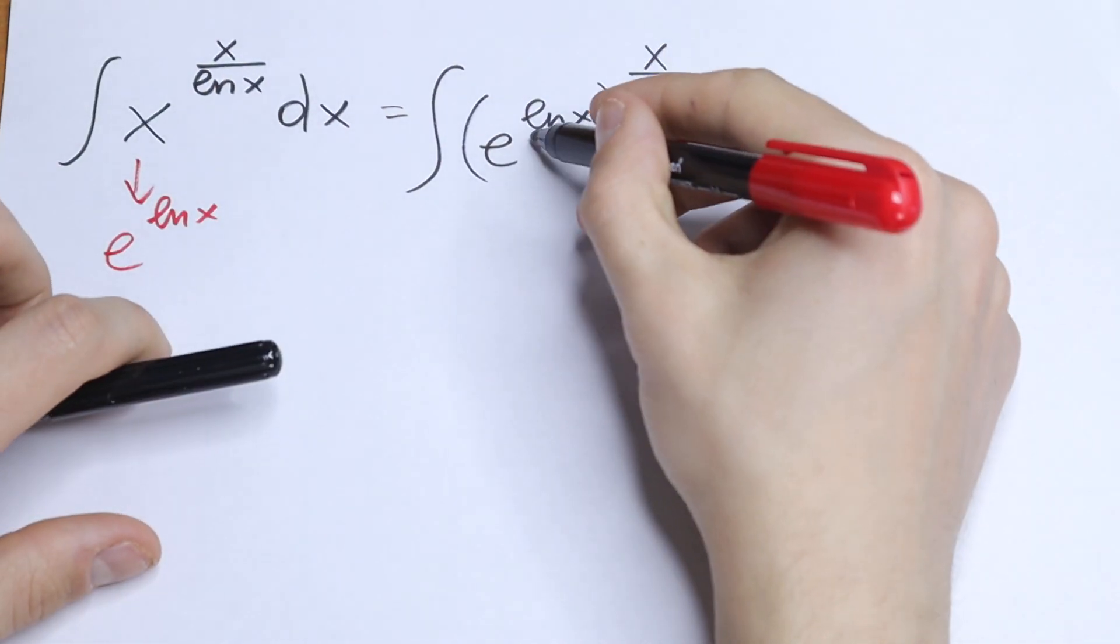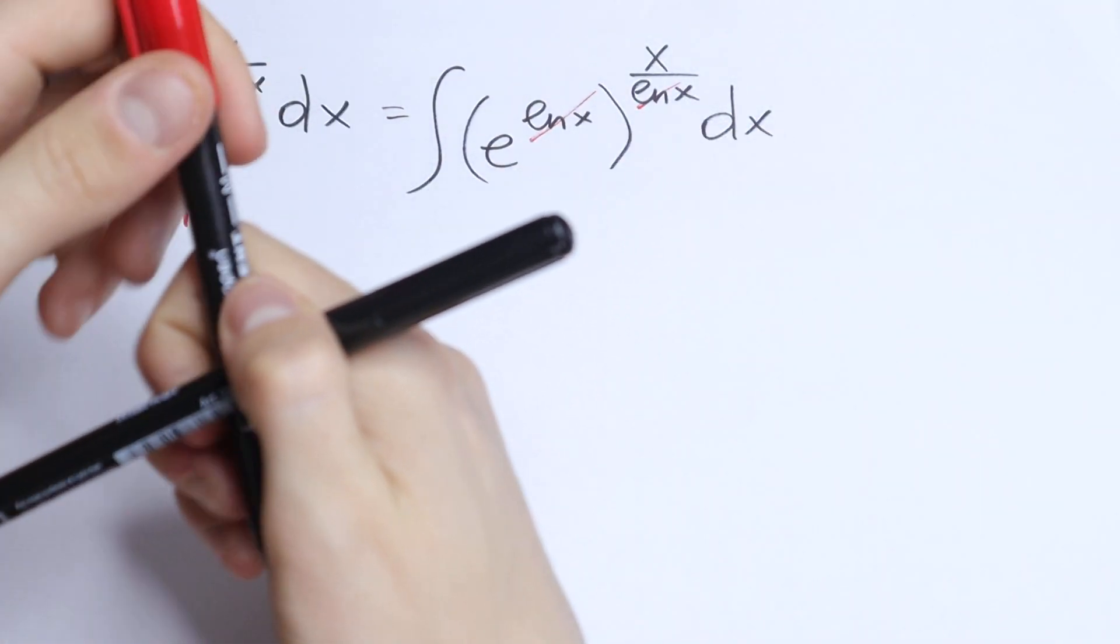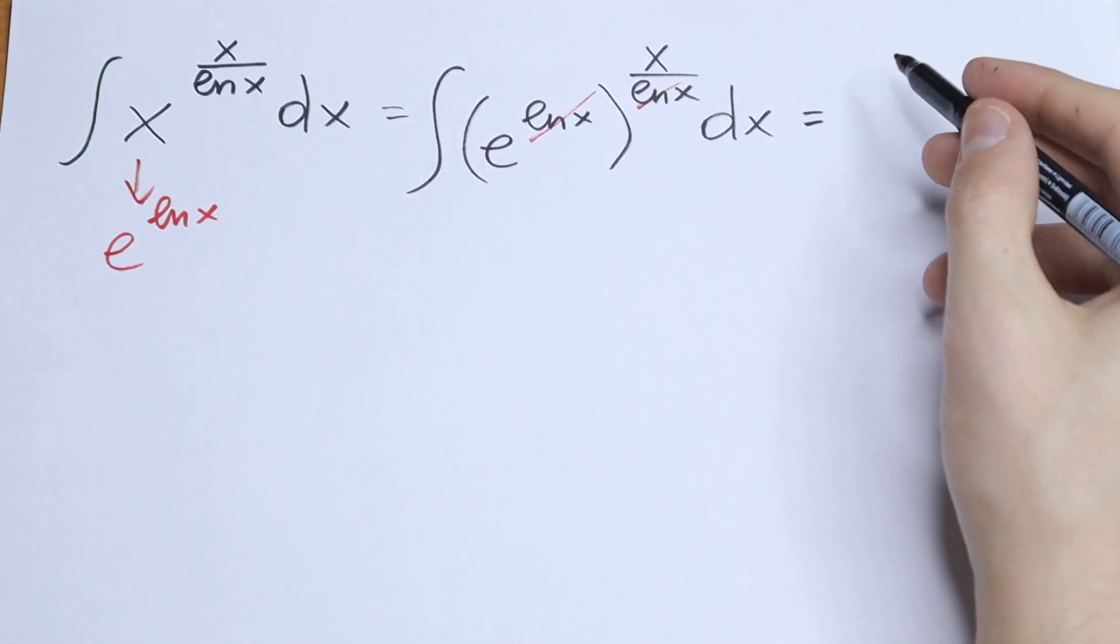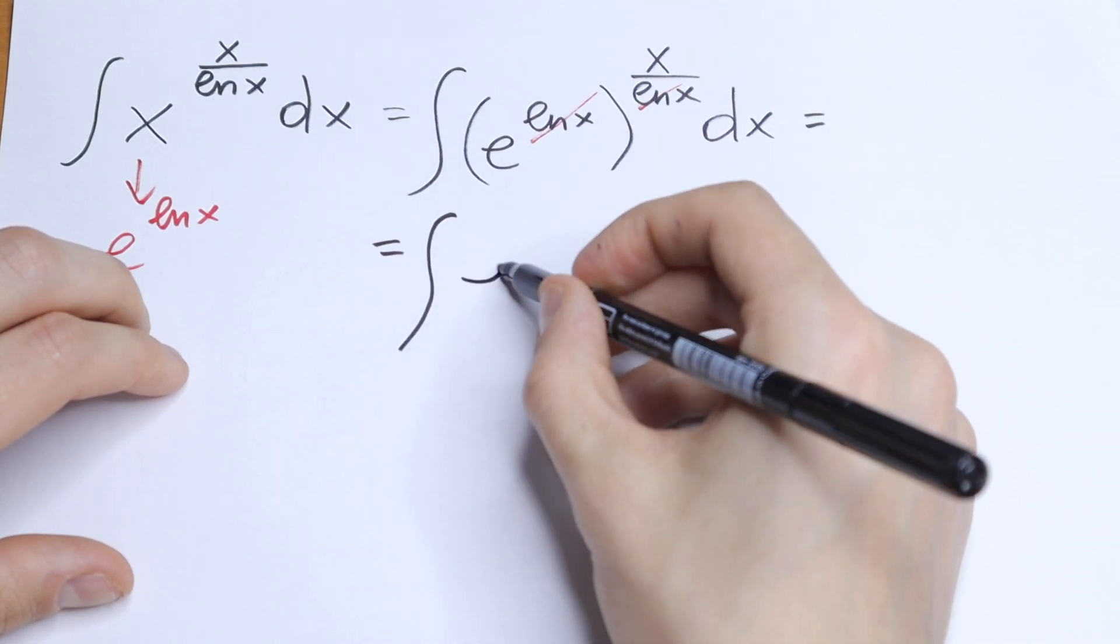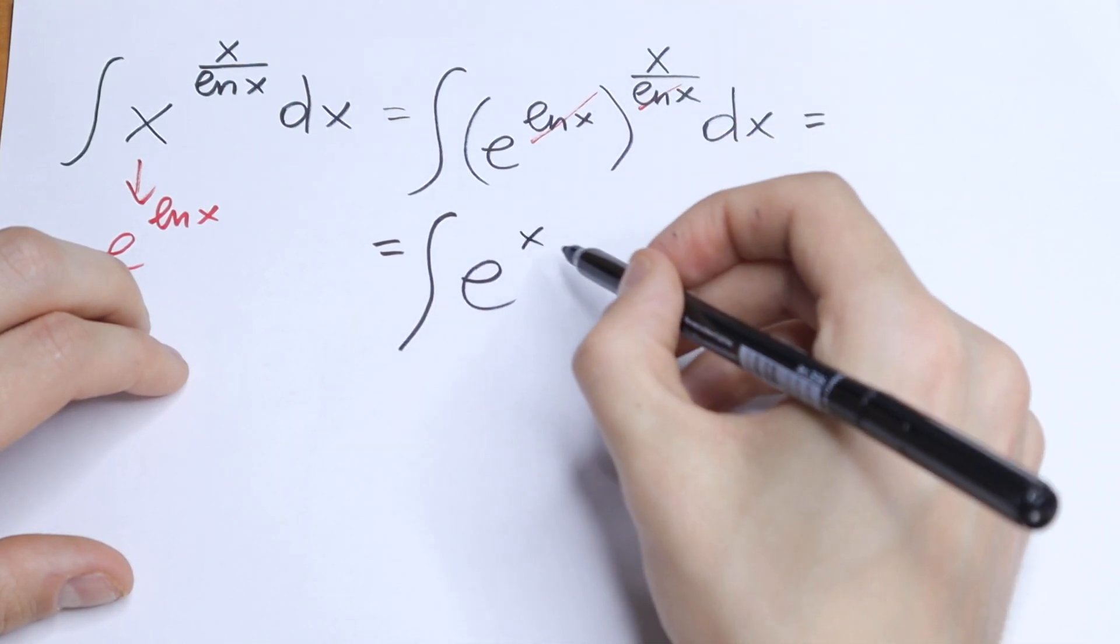So of course we can cancel it. And take a look what we have in the end. We'll have a really good integral, we'll have only the integral of the function e to the power x dx.